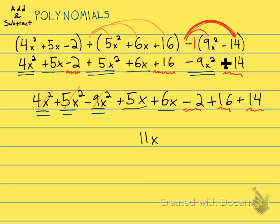And then I have my constants, minus 2, plus 16, plus 14. So you might need to get your calculator for this if you want. That's going to give you plus 28. These are not like terms. I can't put them together. And that's it. I'm done.